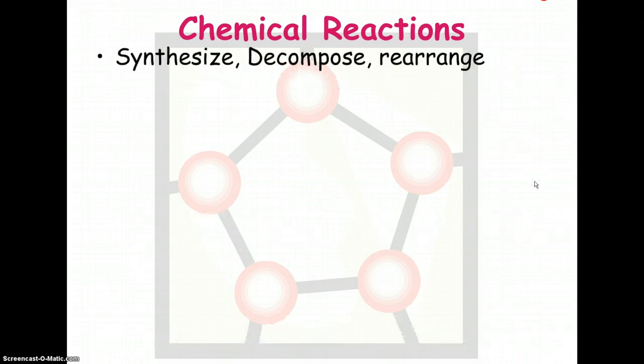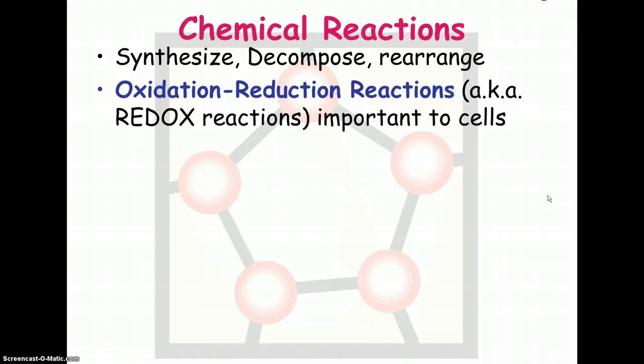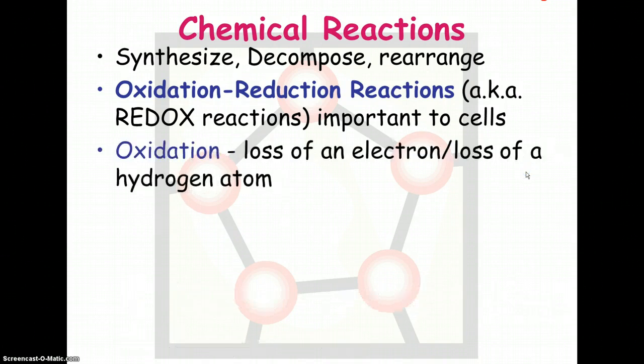In chemistry, you've learned about various chemical reactions, synthesis, decomposition. You may remember single replacement, double replacement. A type that you don't really learn about in chemistry, but you do learn about if you took AP chemistry, is something called a redox reaction, or an oxidation-reduction reaction. Now, we're not going to learn how to balance those. They're a bit complicated. What you do need to know is the basic definition, because this is going to play a very big role when we talk about cell respiration and when we talk about photosynthesis.